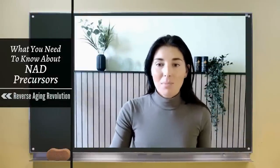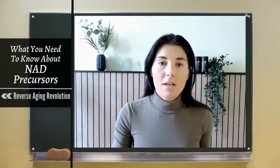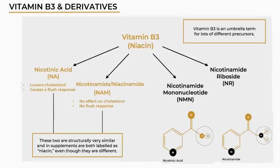When it comes to all the other precursors — the vitamin B3 derivatives — it becomes slightly more complicated because there's often confusion about the difference between the precursors due to the way they are named. Vitamin B3 and niacin are used interchangeably as an umbrella term to refer to multiple vitamin B3 derivatives. For example, both nicotinic acid and nicotinamide are often labeled as niacin, even though they are structurally different and have very different effects in the body. Nicotinic acid helps reduce cholesterol whereas nicotinamide does not, and nicotinic acid activates receptors that cause an intense flushing sensation in the skin whereas nicotinamide does not. Just to add further confusion, nicotinamide is also sometimes referred to as niacinamide, but they are the same thing.